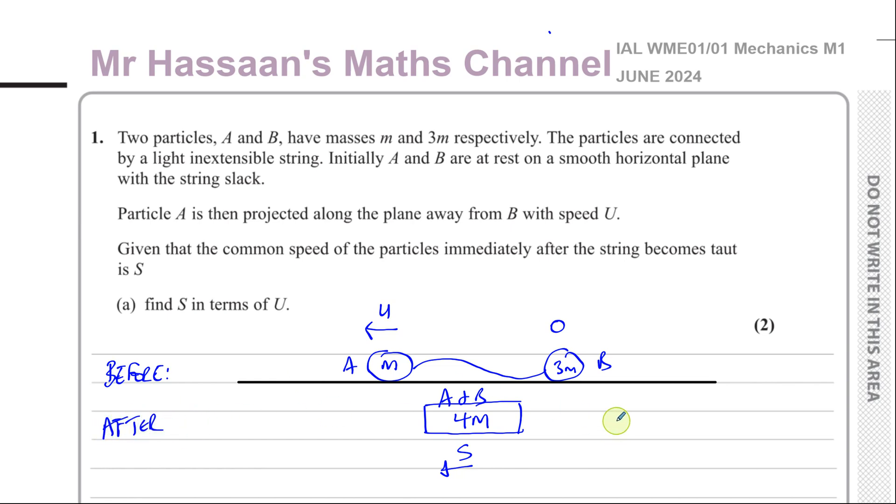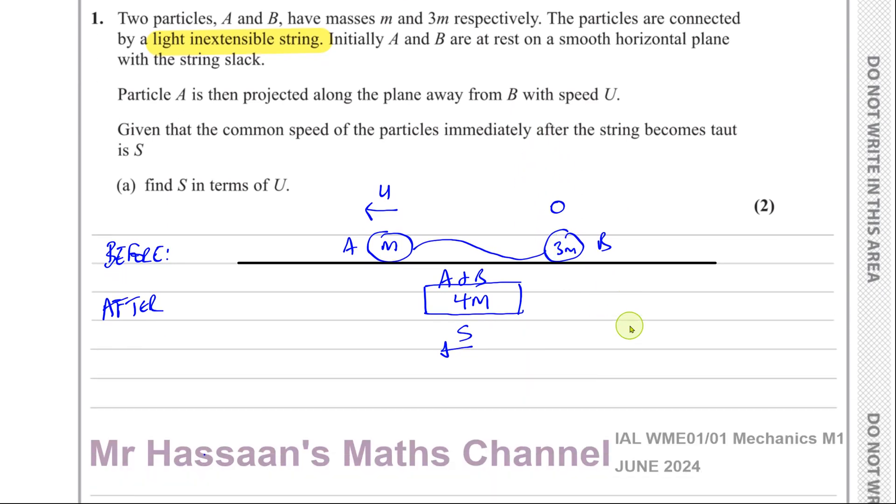Because they're joined by light, inextensible string, we don't consider the mass of the string. And we know that when the string is taut, that the particles which are connected to it are moving with the same velocity, the same acceleration, same direction, if they're this type of connected particle. So now, we can set up by the conservation of linear momentum, an equation which will help us find what S is in terms of U.